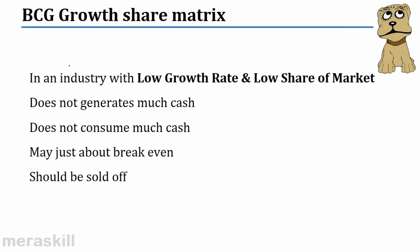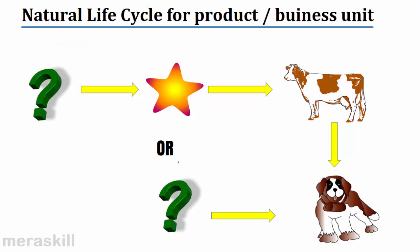Finally, you have the dog — in an industry with low growth rate and low market share. Does not generate much cash, does not consume much cash, and does not have much potential. These are declining markets. The natural life cycle for a product is: the question mark may become a star, then a cash cow, and finally reach the dog stage — or the question mark, when we are not able to capture market share, may just become a dog directly.